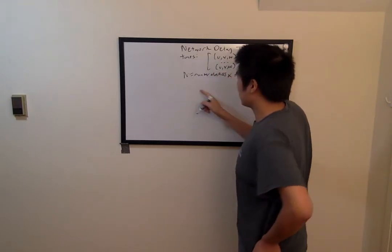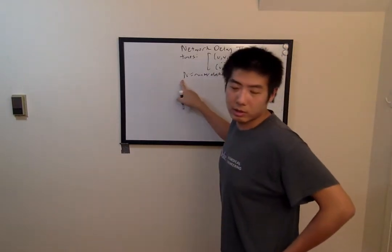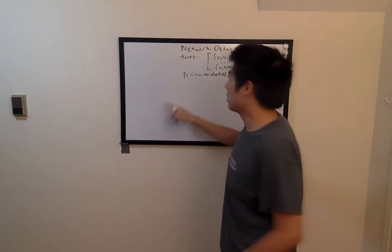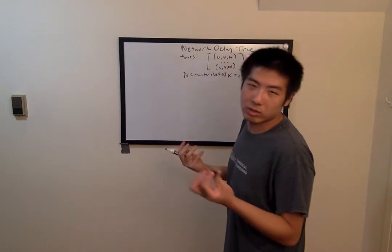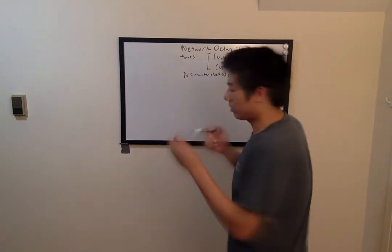And the way that this question is set up, the vertices will always be labeled with the numbers 1 through n. So for example, if n equals 3, then you have 3 vertices labeled 1, 2, and 3 respectively.